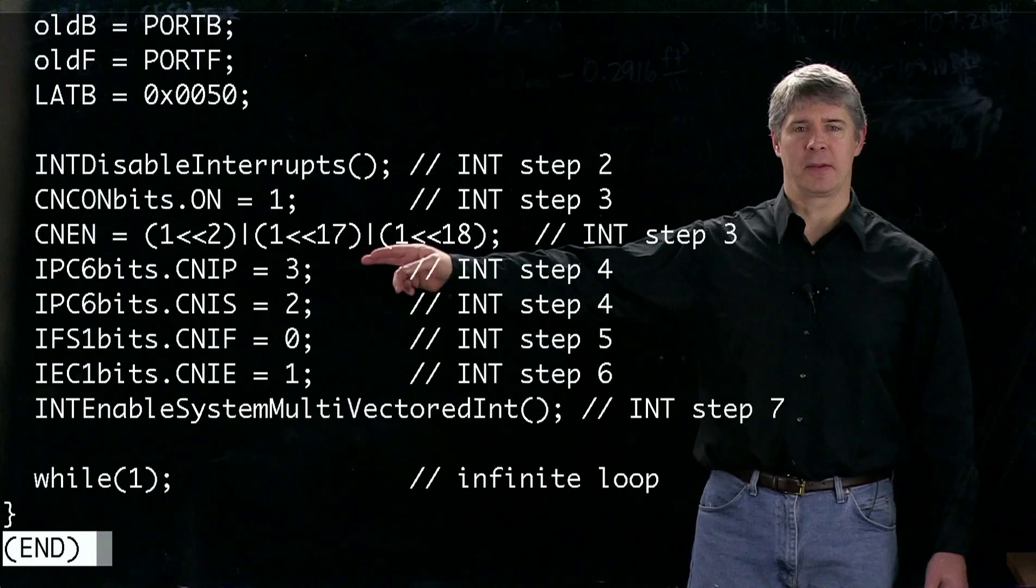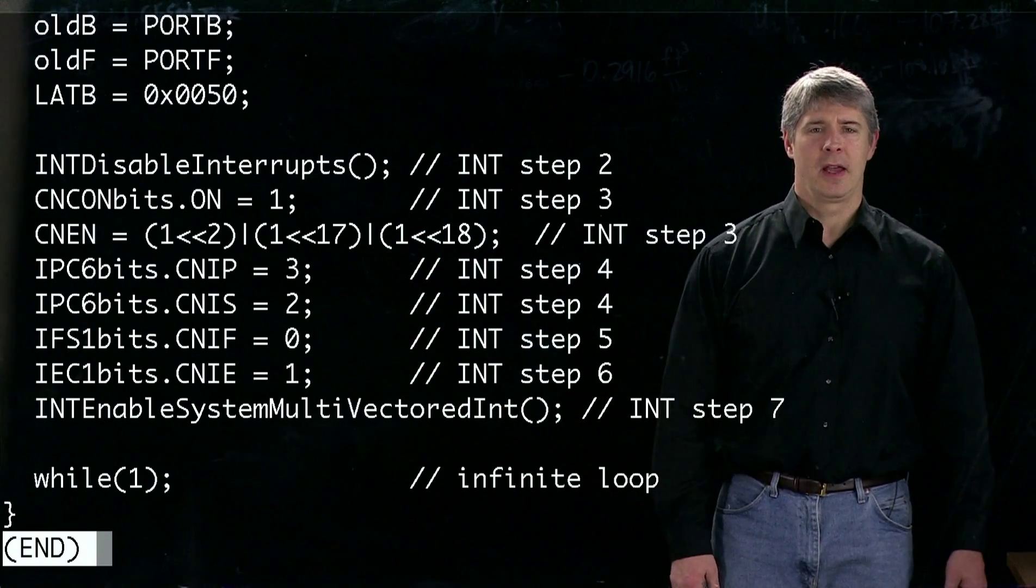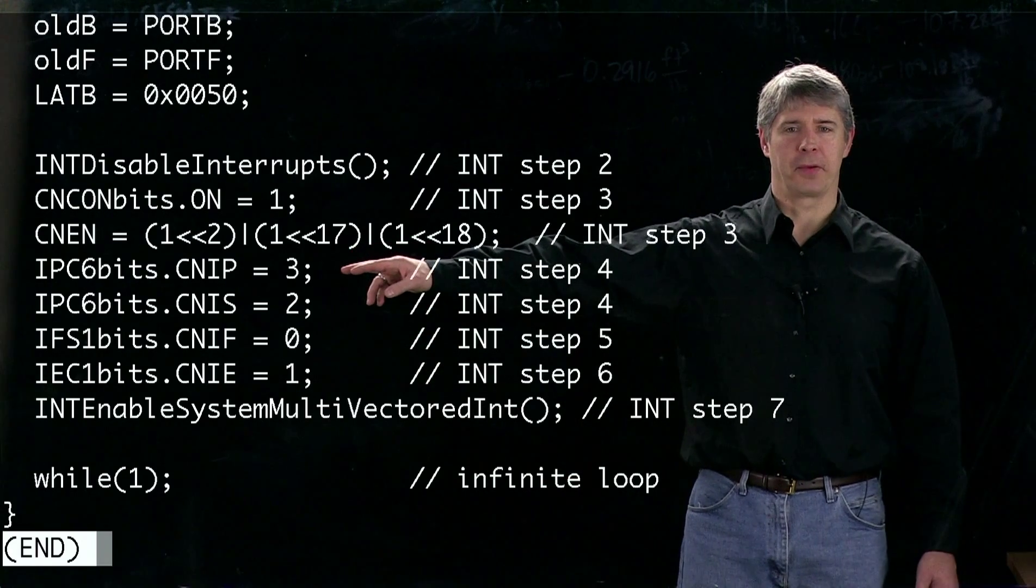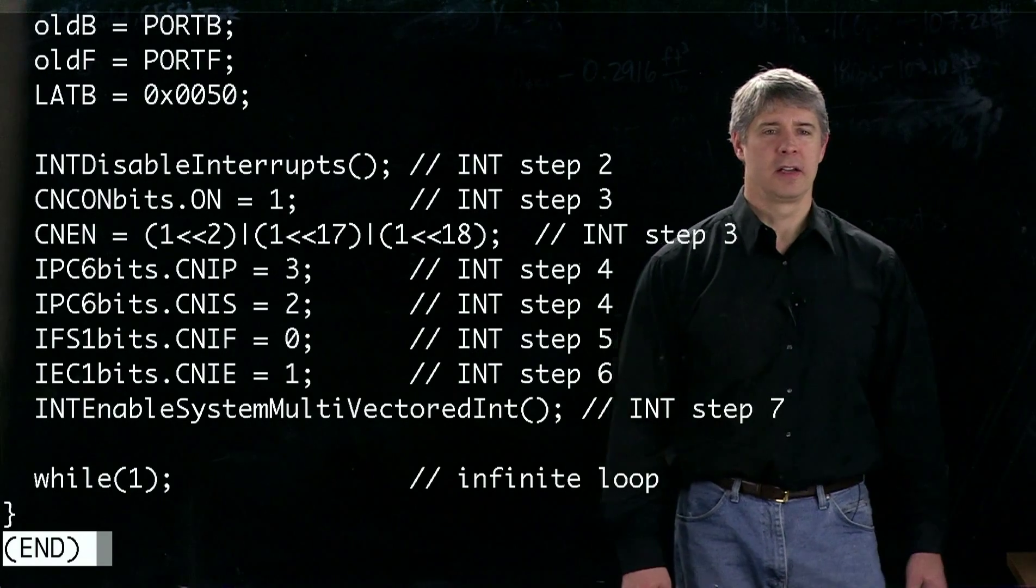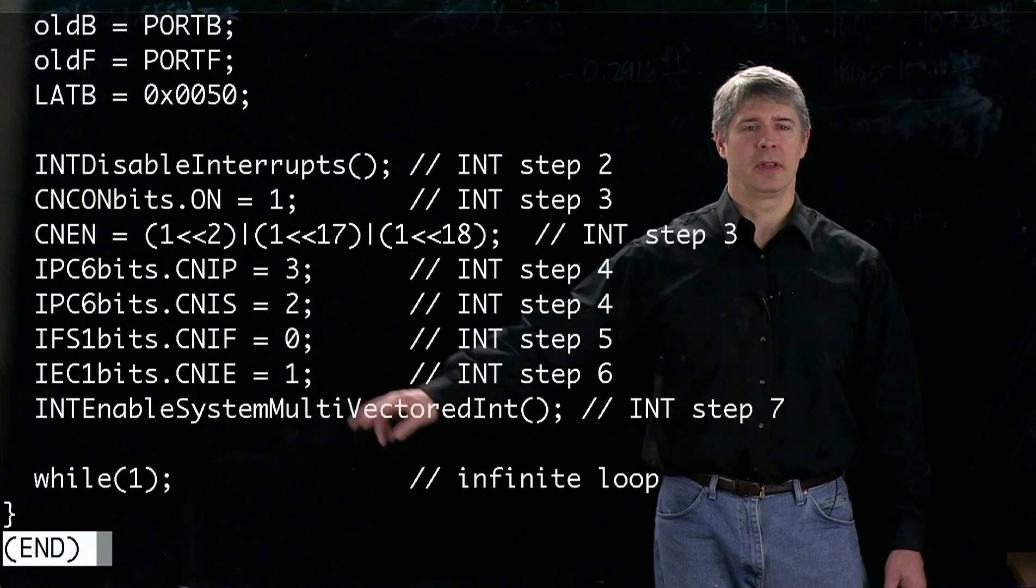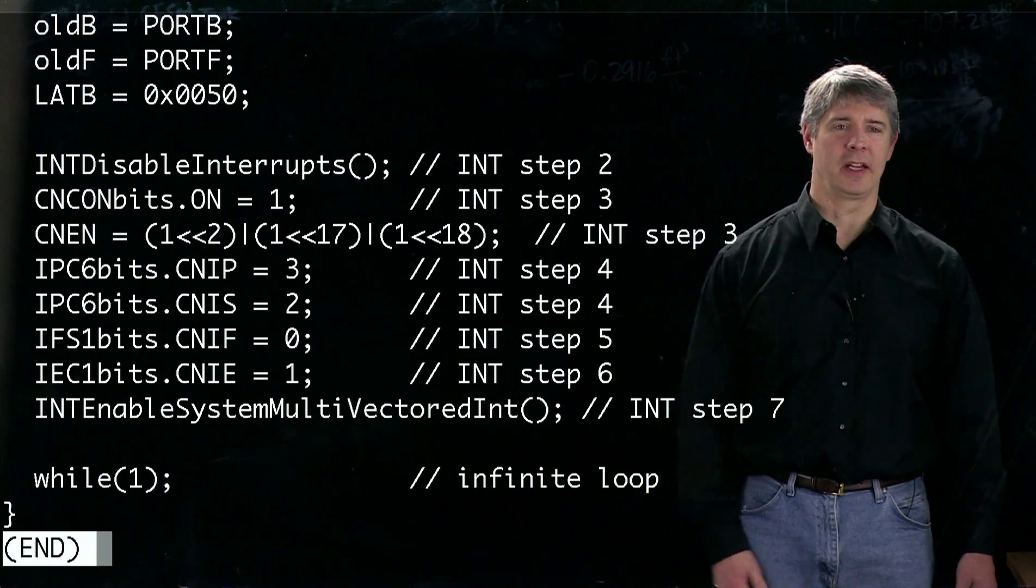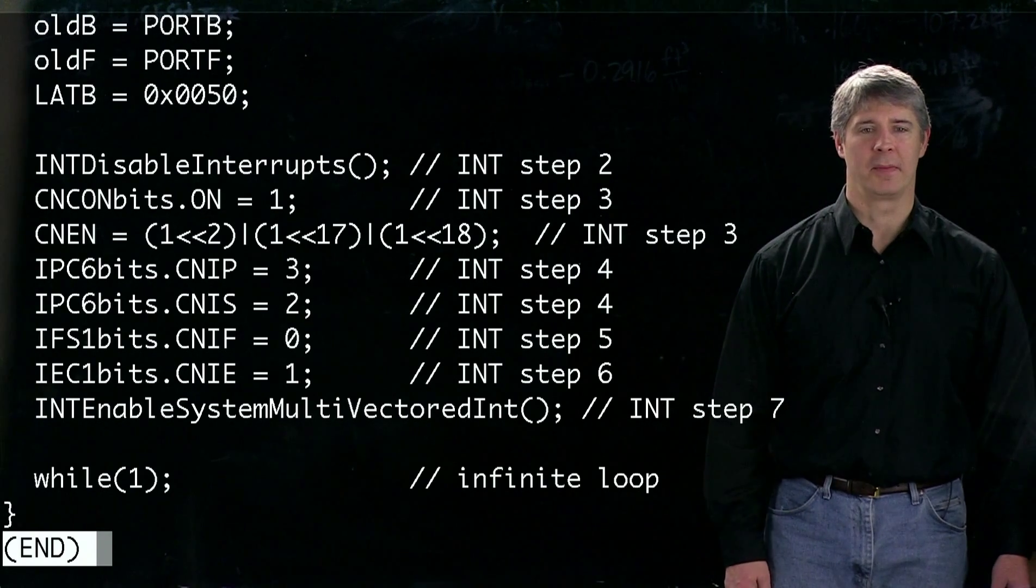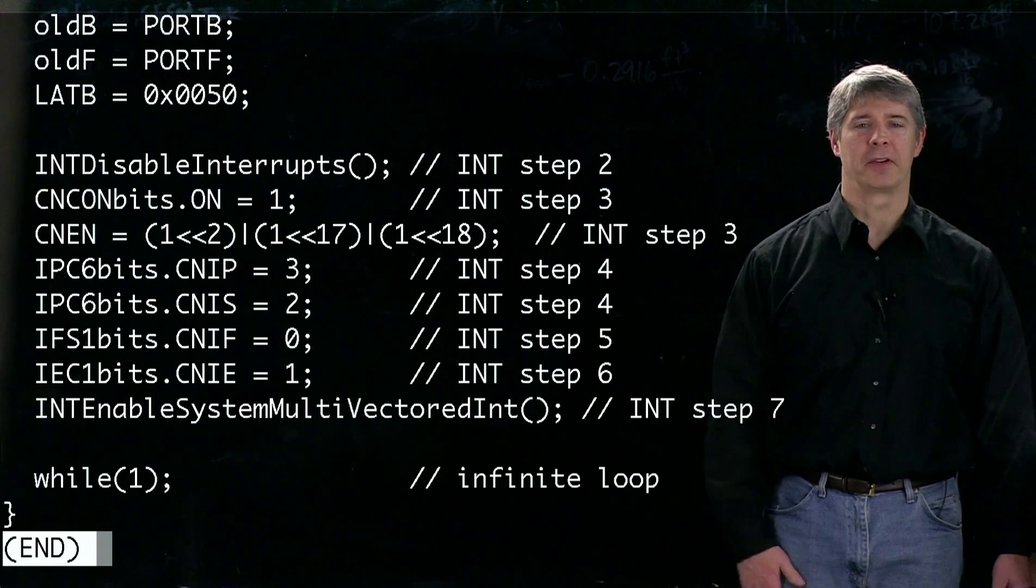Next, we set the priority and sub-priority of the interrupt. Here we've got priority level 3. In the next step, we set the interrupt flag to zero to clear it. Now we enable change notification to generate interrupts, and in the last step we enable the CPU to start paying attention to interrupts. After that, we just go into an infinite loop waiting for interrupts.